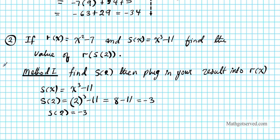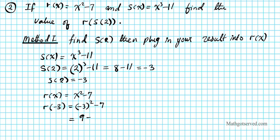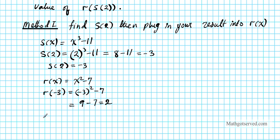Our instructions are to plug in our result into r of x. r of x is x squared minus 7. So r of negative 3 is going to be negative 3 squared minus 7. Negative 3 squared is 9, and 9 minus 7 equals 2. So our final result, r of s of 2, is equal to 2.